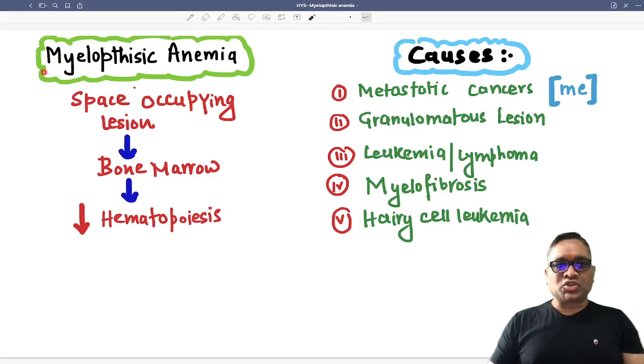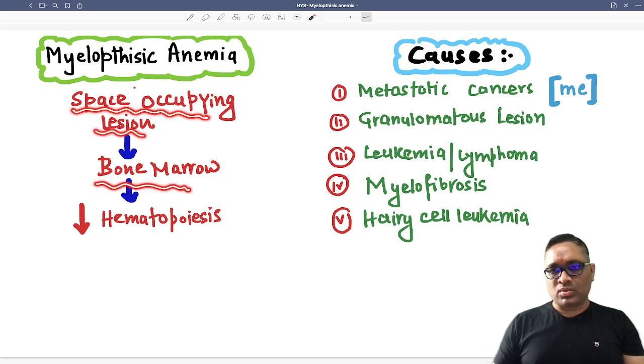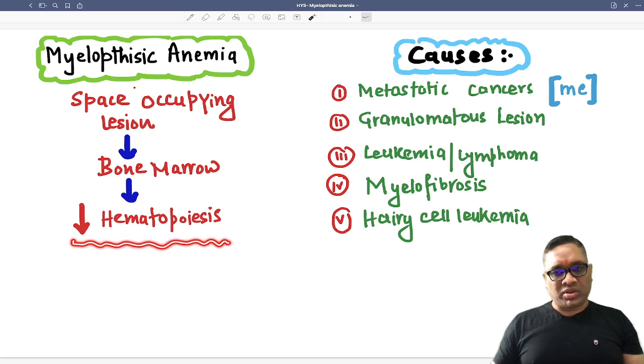Hello everyone. In this high yielding shorts, I am going to tell you about myelophthisic anemia, which is a space occupying lesion of the bone marrow. Because of that, it will decrease hematopoiesis due to the space occupying lesion.